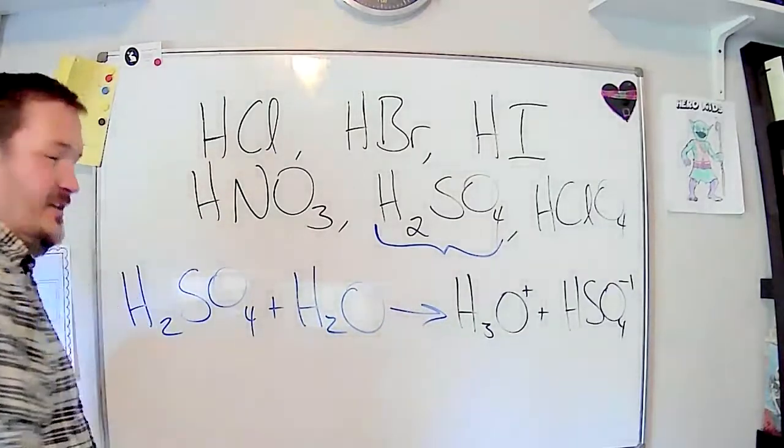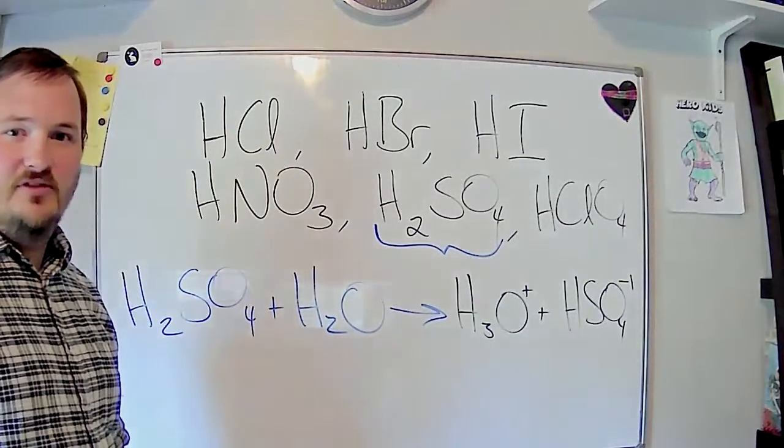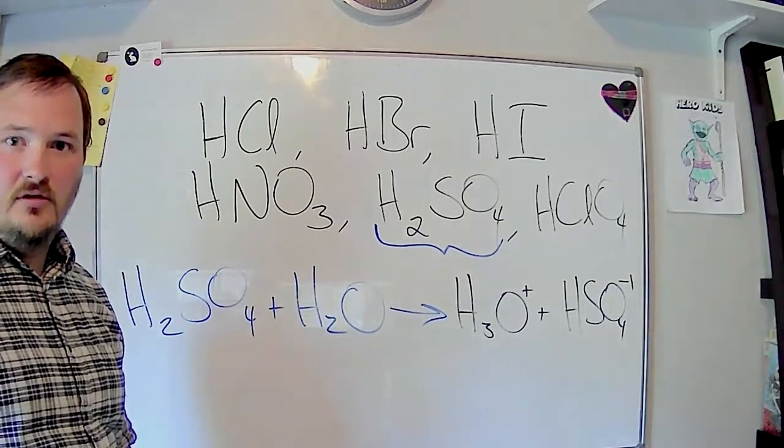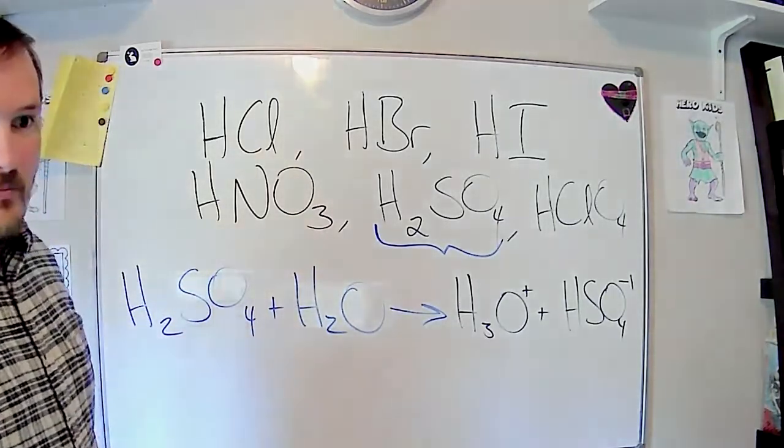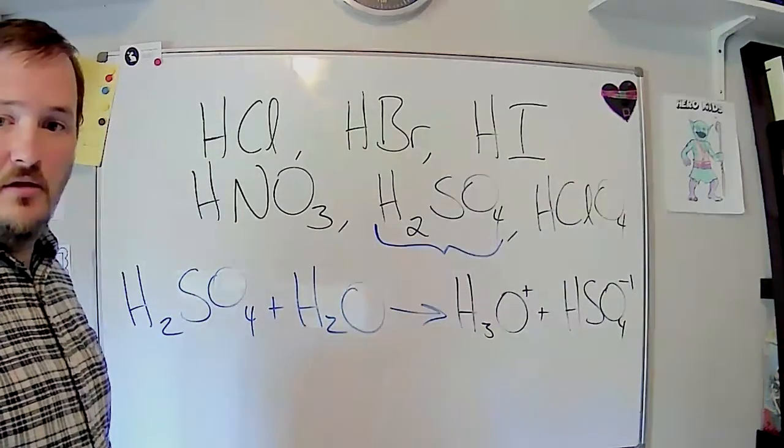And if you know the concentration of H3O+, all you have to do is take the log of that to get your pH. Just make sure that it's log base 10, not natural log. If you don't want to use the ln button on your calculator, you want to use log.